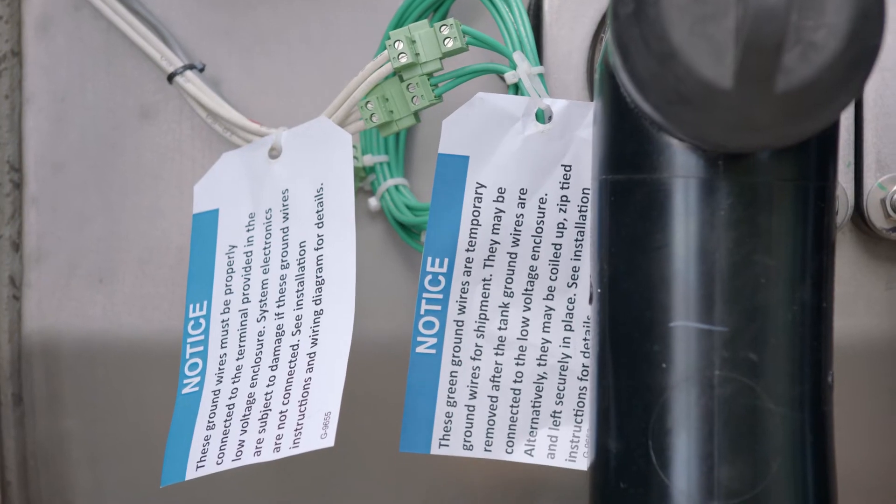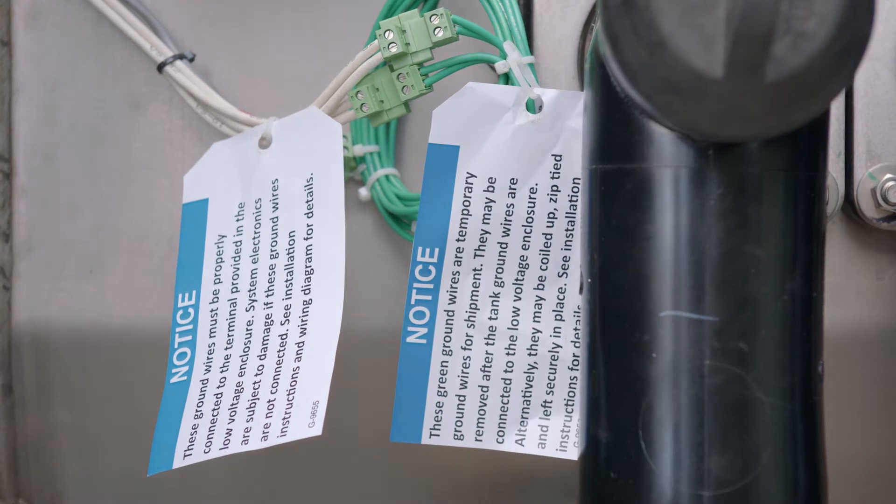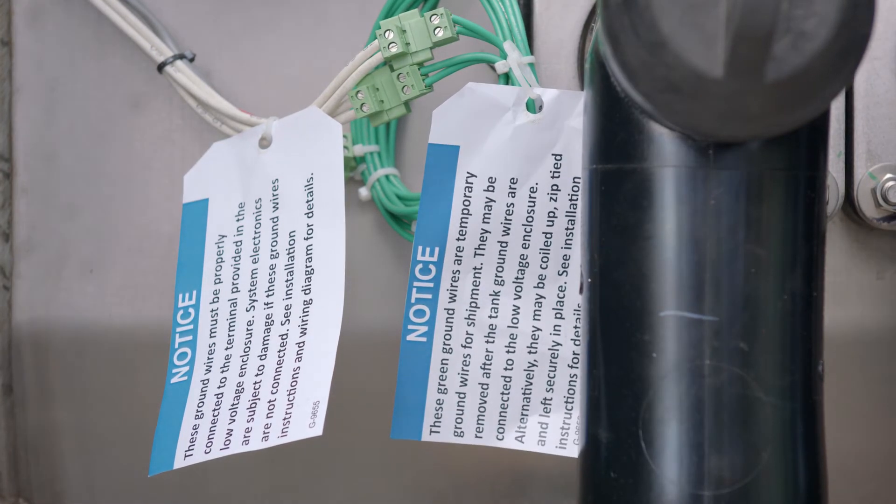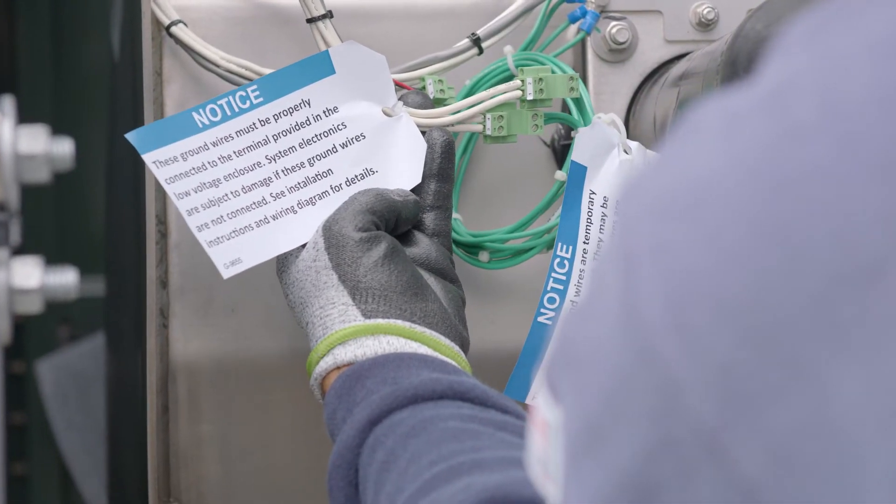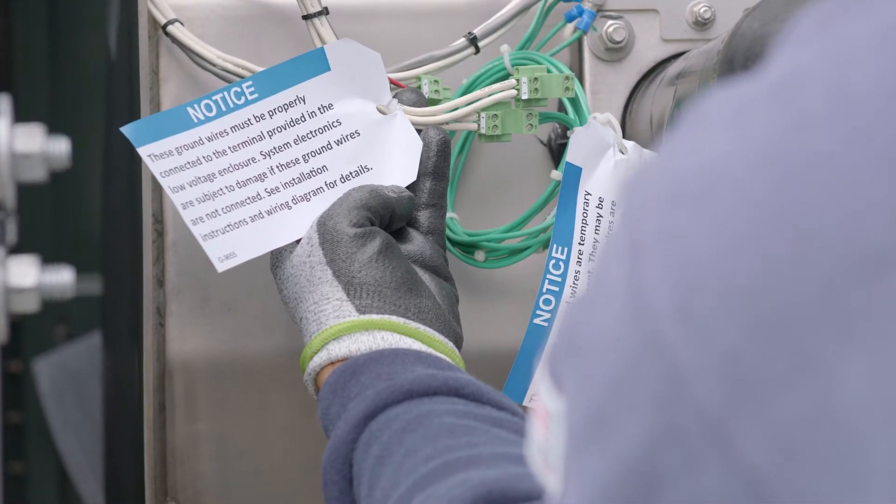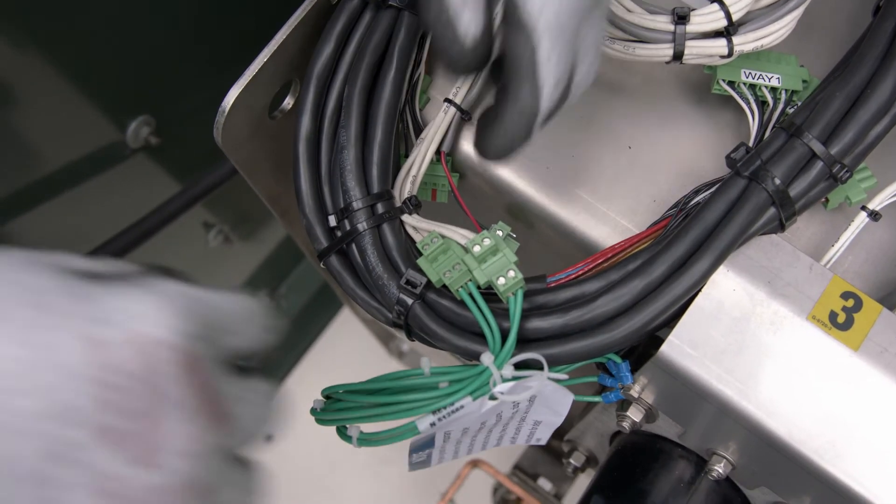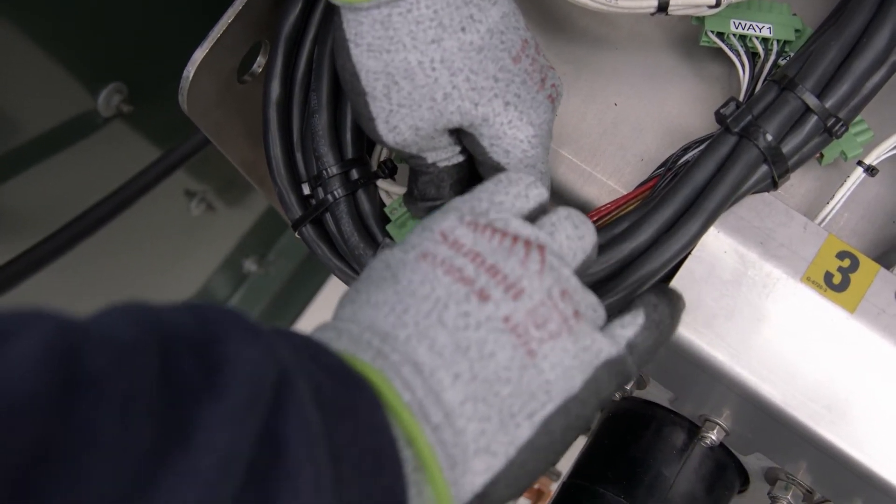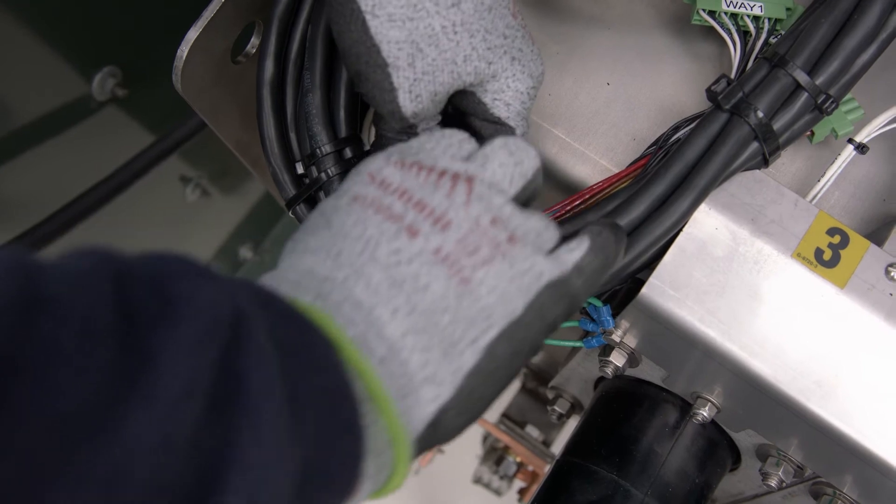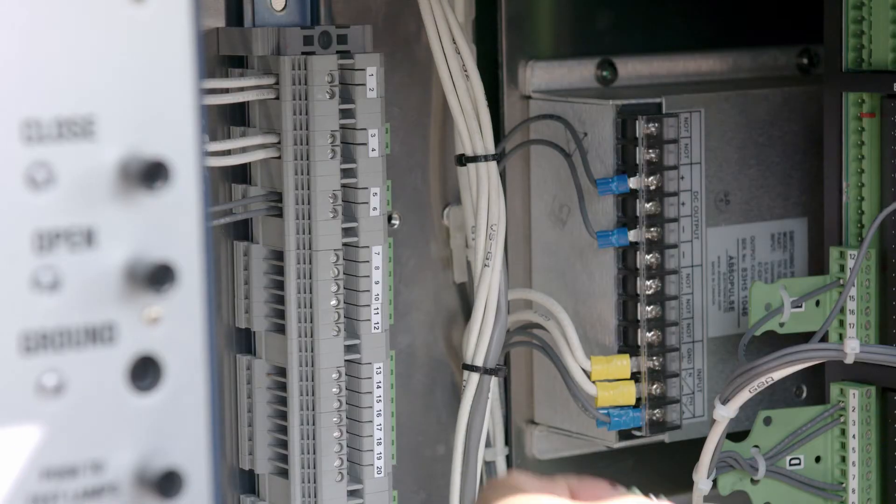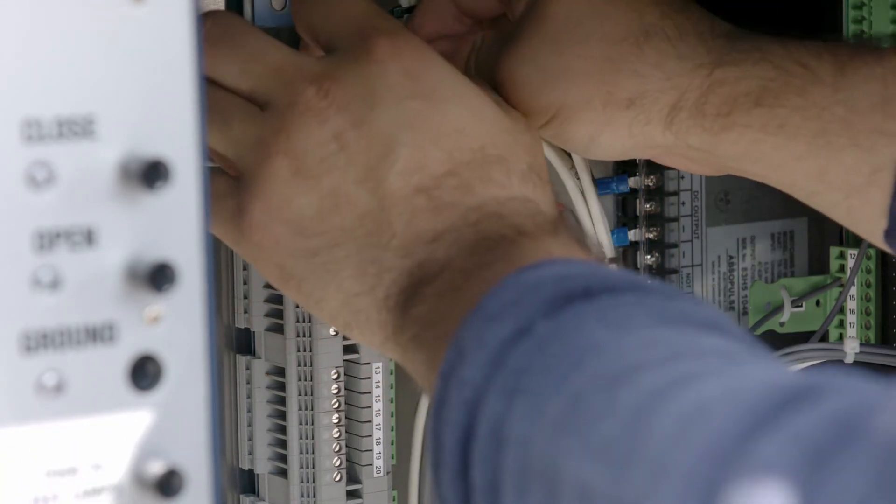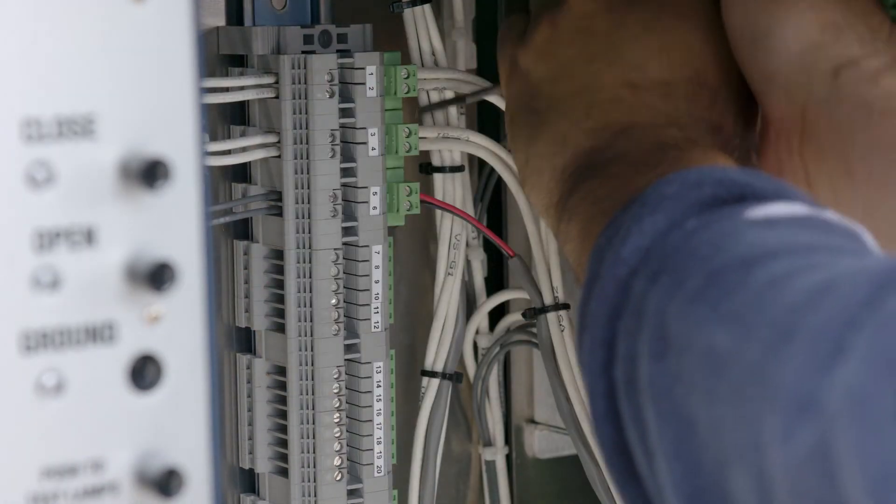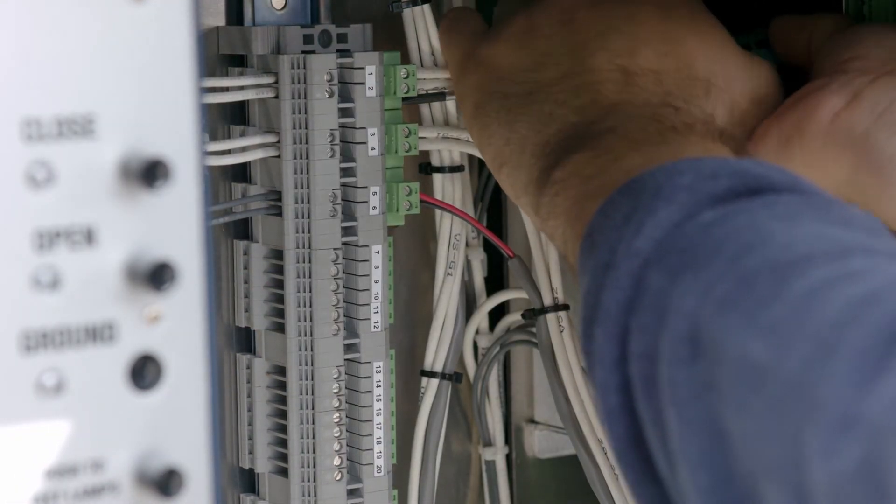There will be up to three pairs of ground wires, VSG1 and VSG2, that are included in the main enclosure. See your wiring diagram for details. Disconnect the ground wires from the temporary grounding leads and route them into the low voltage enclosure. Attach the ground wires to the terminal block specified in the drawings provided and fully tighten the set screws.